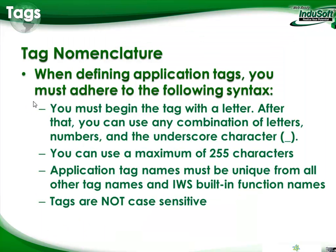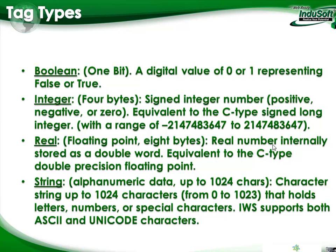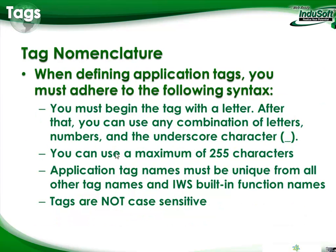Now, tag naming and conventions. When defining application tags or project tags, you must adhere to the following syntax: they must begin with a letter. After that, you can use any combination of letters, numbers, and the underscore character. You can use a maximum of 255 characters for the tag name. That seems like a lot, but when you start getting up to 10 million tag names in a project, it becomes vital to have plenty of character space so your tag names can be unique.